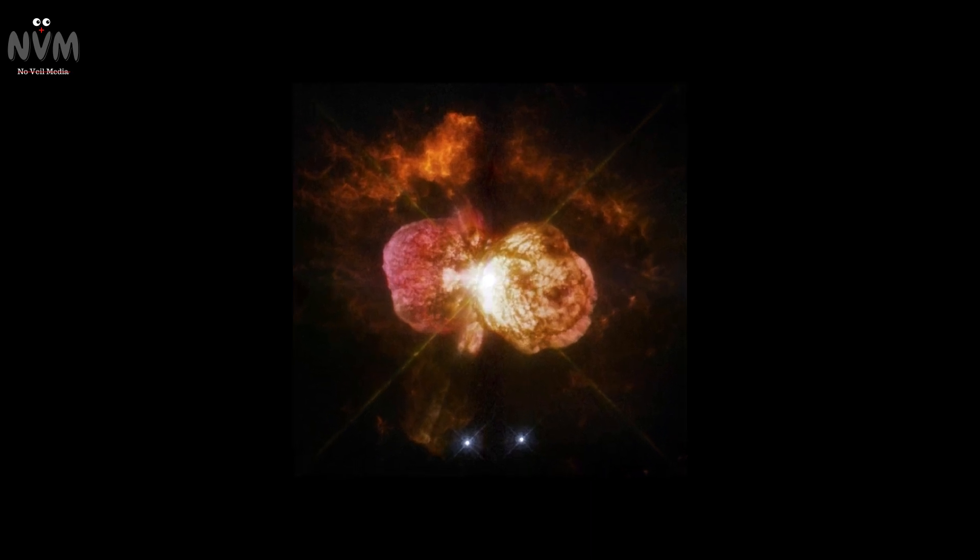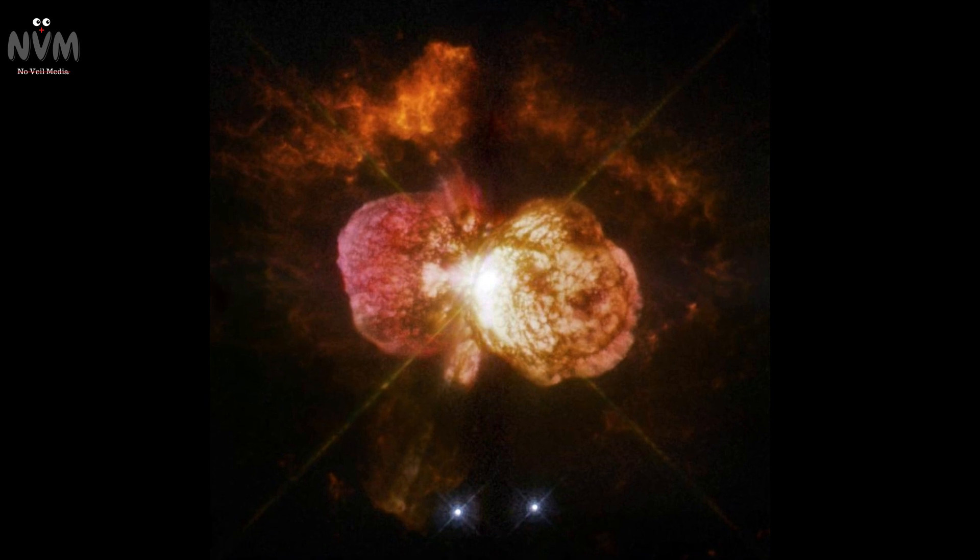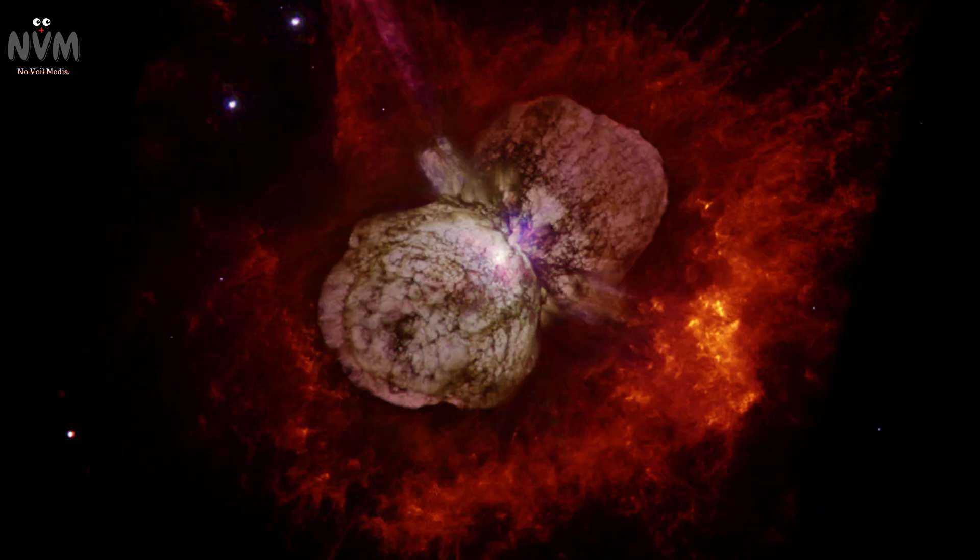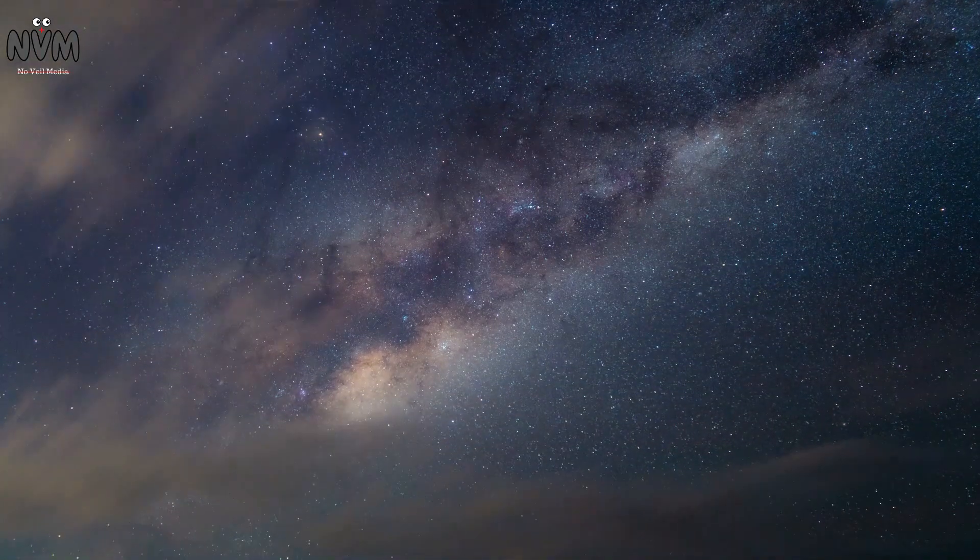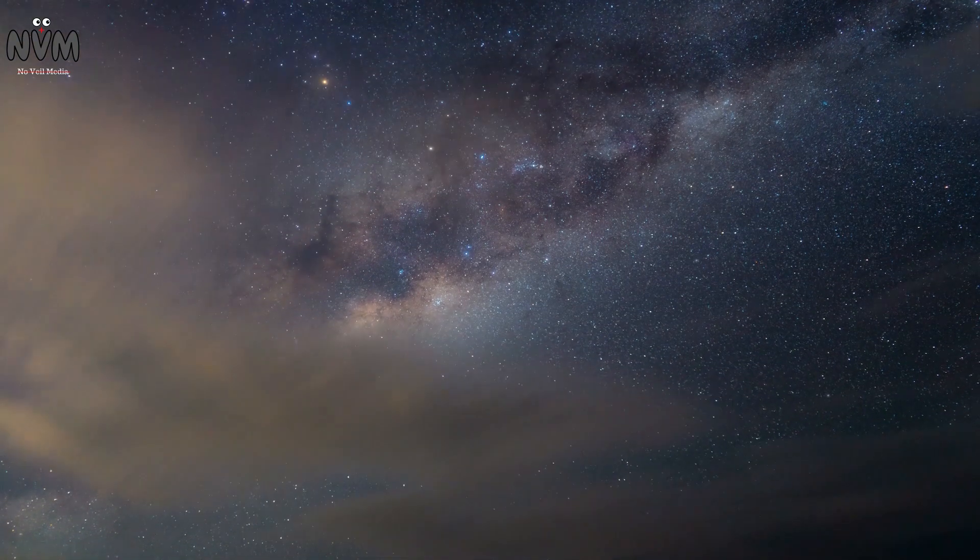Then there is Eta Carinae, located about 7,500 light-years away in the southern constellation of Carina. It is home to a star 90 times the mass of our Sun, classified by astronomers as a luminous blue variable star. Its stellar wind blows at nearly one million miles per hour and is especially dense, carrying the equivalent mass of our Sun every 1,000 years. These are just a couple of the hundreds of supernovae detected by scientists each year throughout the universe.